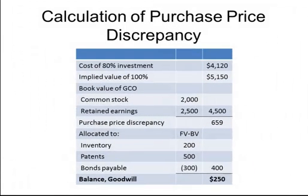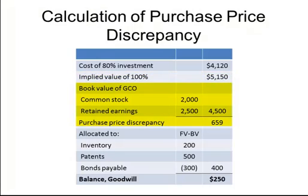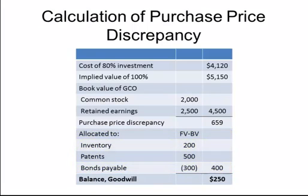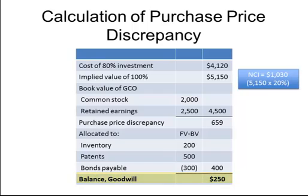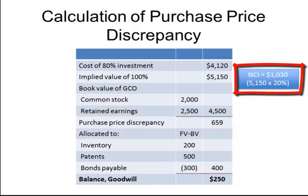Nothing has changed in how we go about preparing the purchase price discrepancy schedule. You start with the cost to acquire the 80% block, then determine the implied value of 100% of equity. We compare this against the existing book value of equity recorded in GECO at the time of acquisition to determine the purchase price discrepancy of $659,000. This gets allocated to the identifiable assets and liabilities — inventory, patents, and bonds payable — leaving a residual of $250,000 representing goodwill. The non-controlling interest is valued on the same basis as parent corporation paid, giving an opening non-controlling interest of $1,030,000.